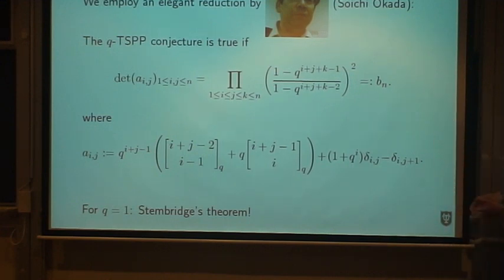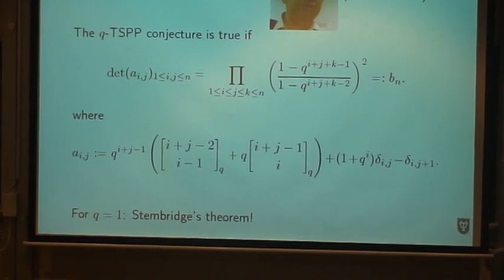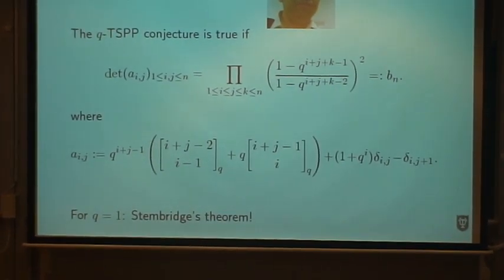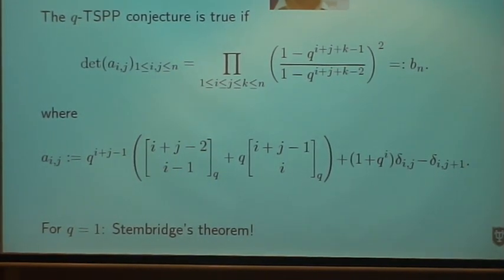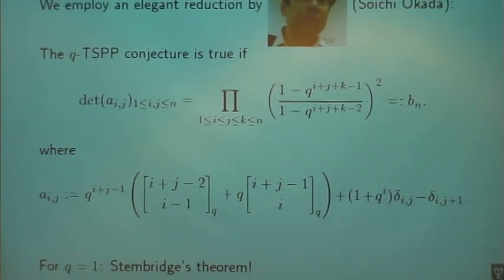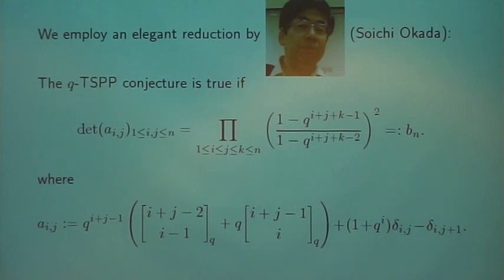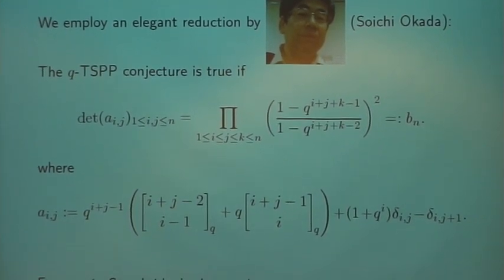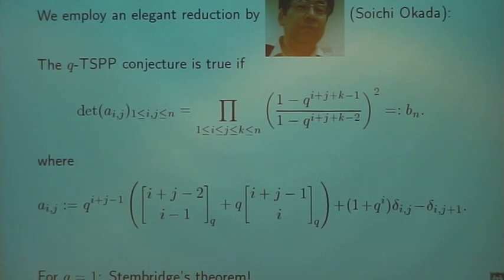During the work that we did on the q-TSPP conjecture, we realized that all the computations that we had to perform turned out to be very complicated. So we started with the q equals one case to re-prove the statement to get a feeling of how the methods work, how far we can go, as a case study so to speak. In the frame of this work, we provided a computer proof of the TSPP statement again.